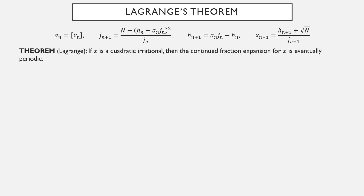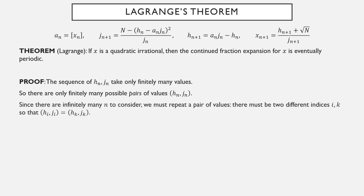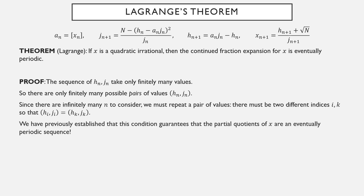We can now prove Lagrange's theorem. The sequences h_n and j_n each take only finitely many values, so there are only finitely many possible pairs (h_n, j_n). But there are infinitely many such pairs in the sequence, so by the pigeonhole principle, some pair must repeat. We've already shown that a repeated pair implies the continued fraction expansion is eventually periodic. Therefore, quadratic irrational numbers have eventually periodic continued fraction expansions.